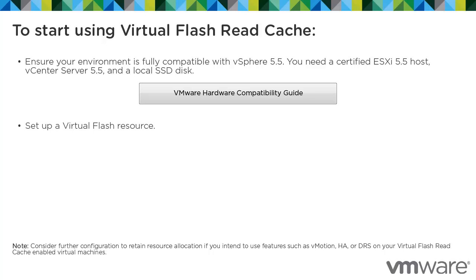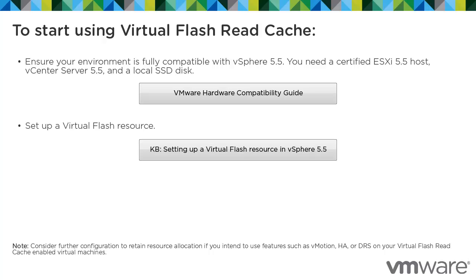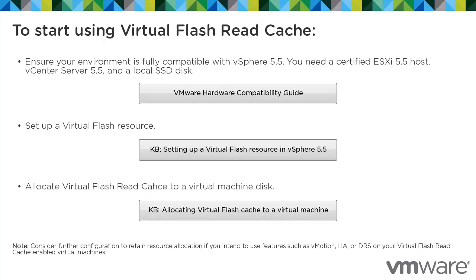Set up a virtual flash resource — for more information, see the knowledge base article: Setting Up a Virtual Flash Resource in vSphere 5.5. Then allocate virtual flash read cache to a virtual machine disk — for more information, see the knowledge base article: Allocating Virtual Flash Cache to a Virtual Machine.